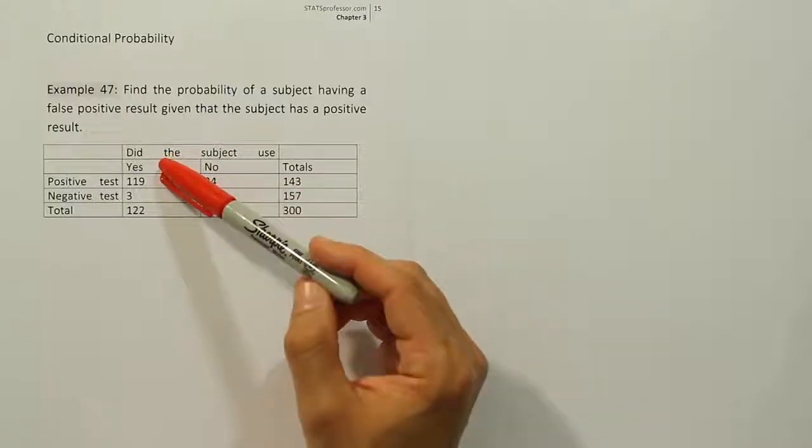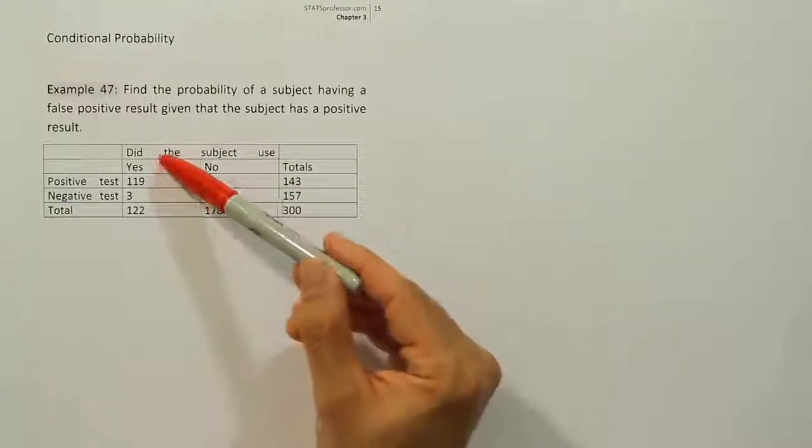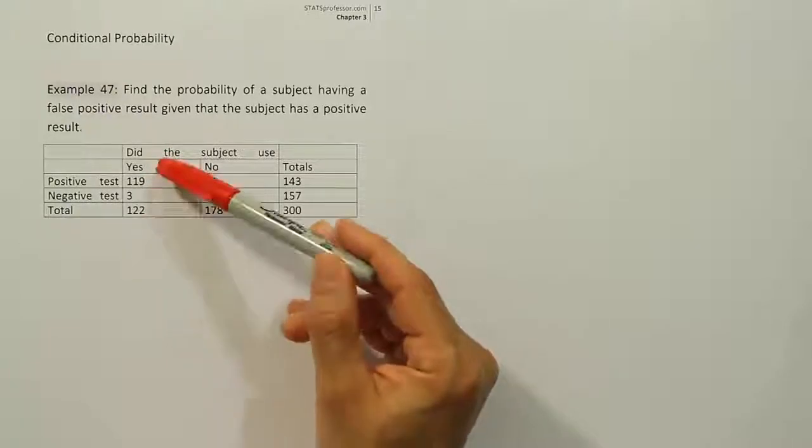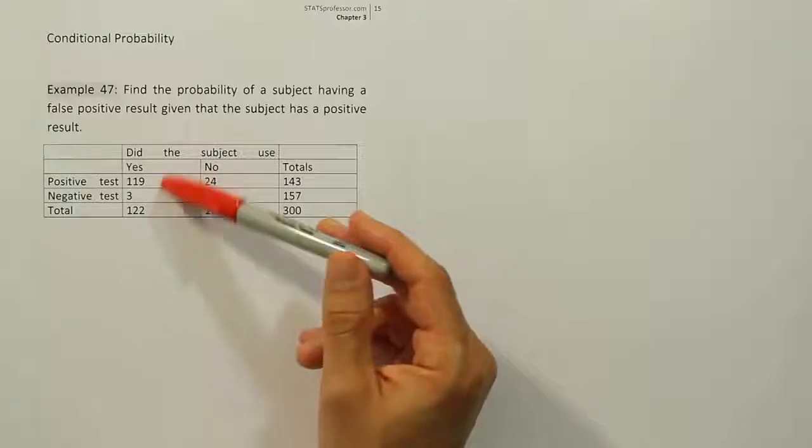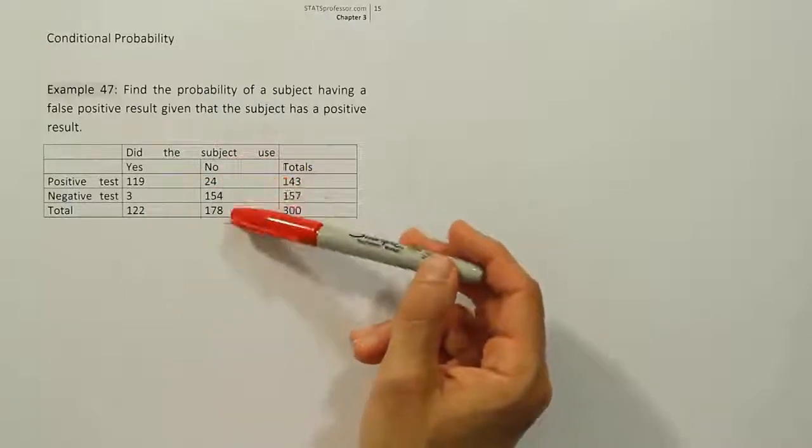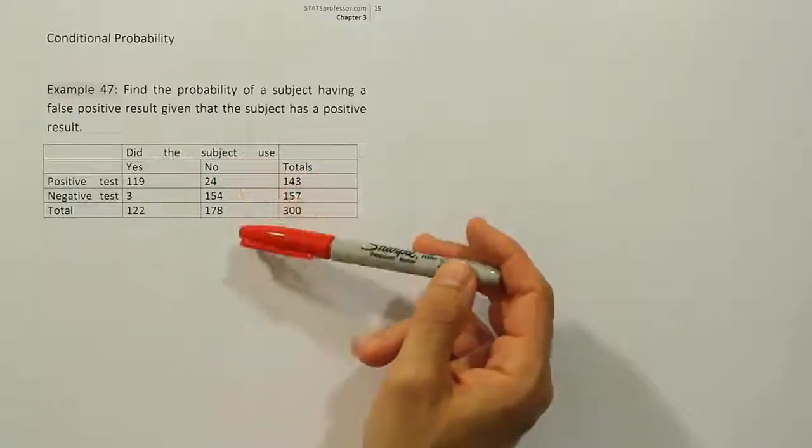So these columns actually are the real information. In other words, they've confirmed that these people here did, in fact, use marijuana. So they might have used a more strict test, like a blood test or a hair sample or something. And this column is for the people who did not use marijuana.